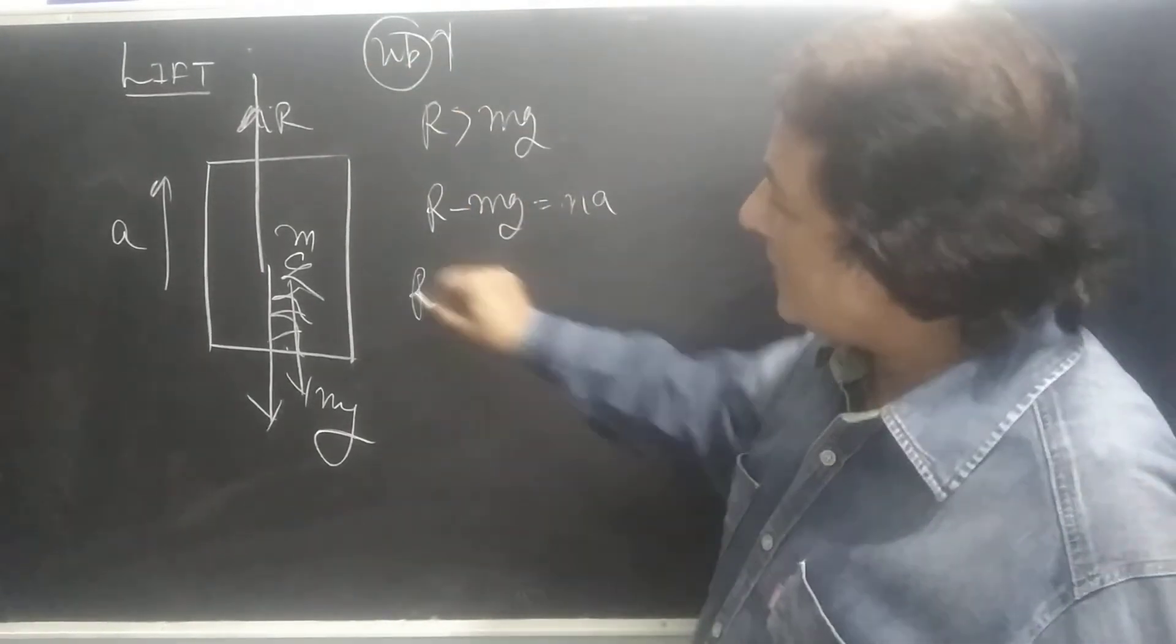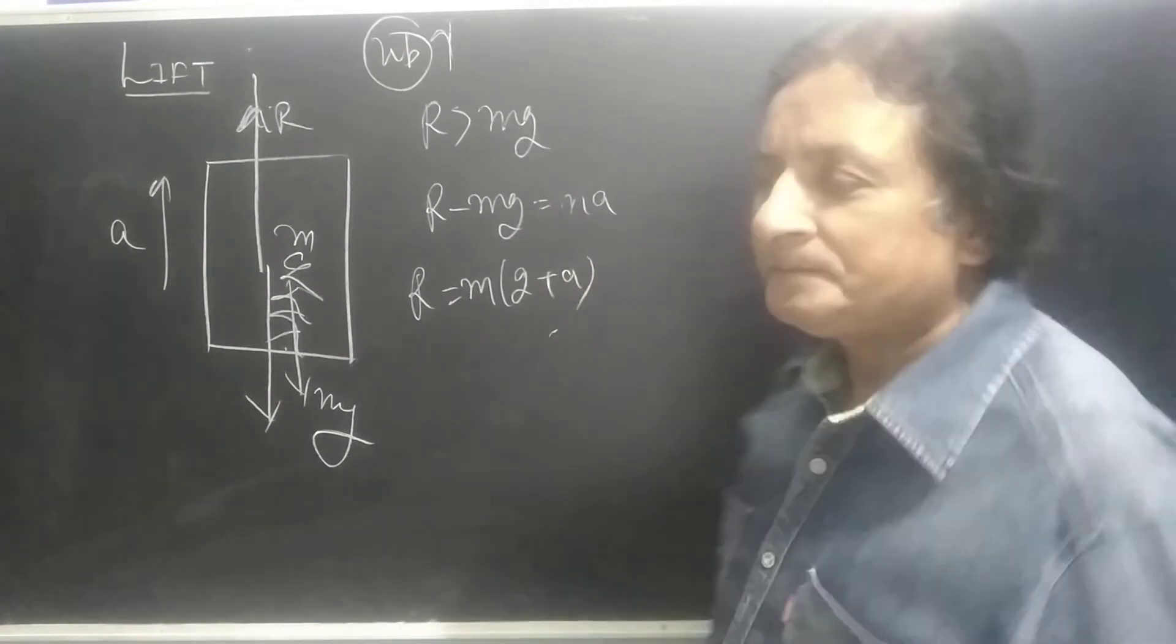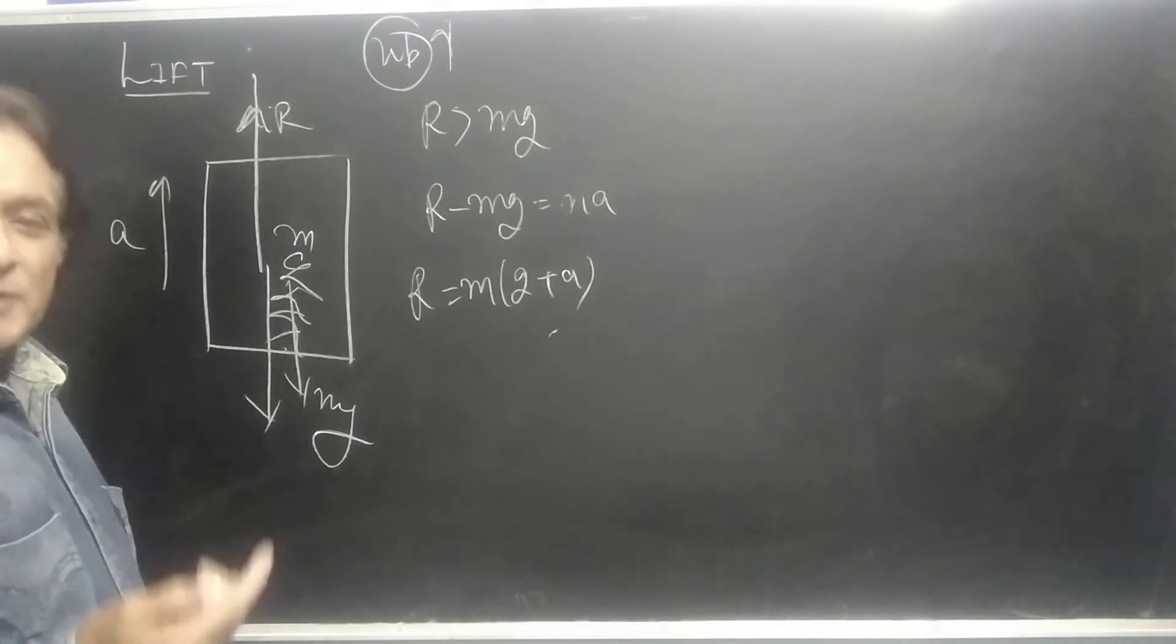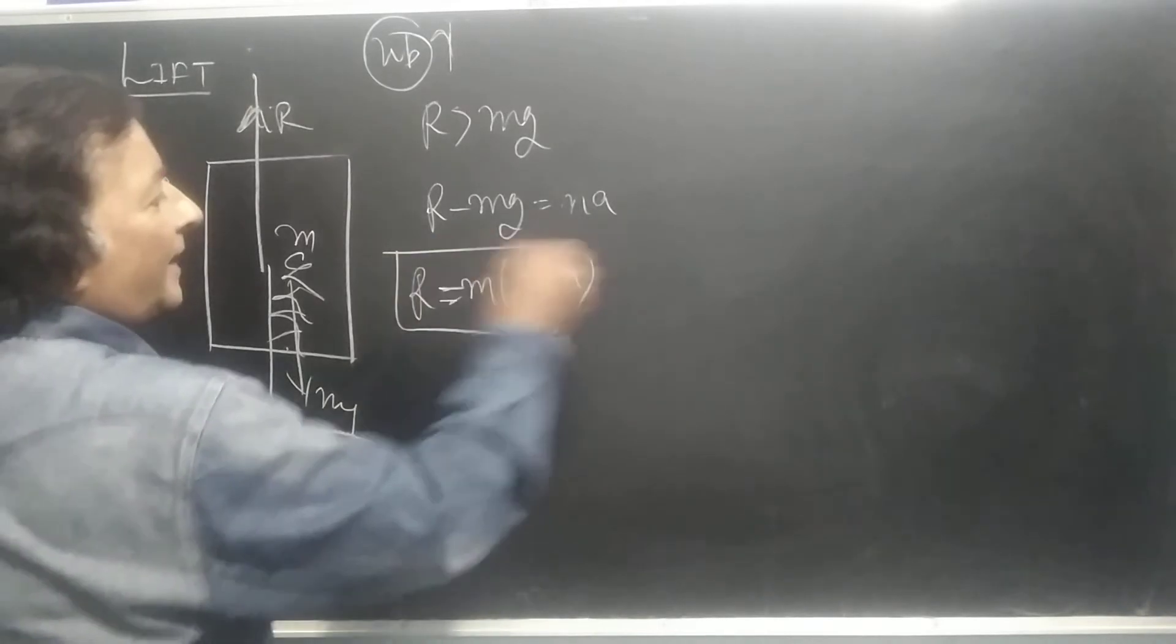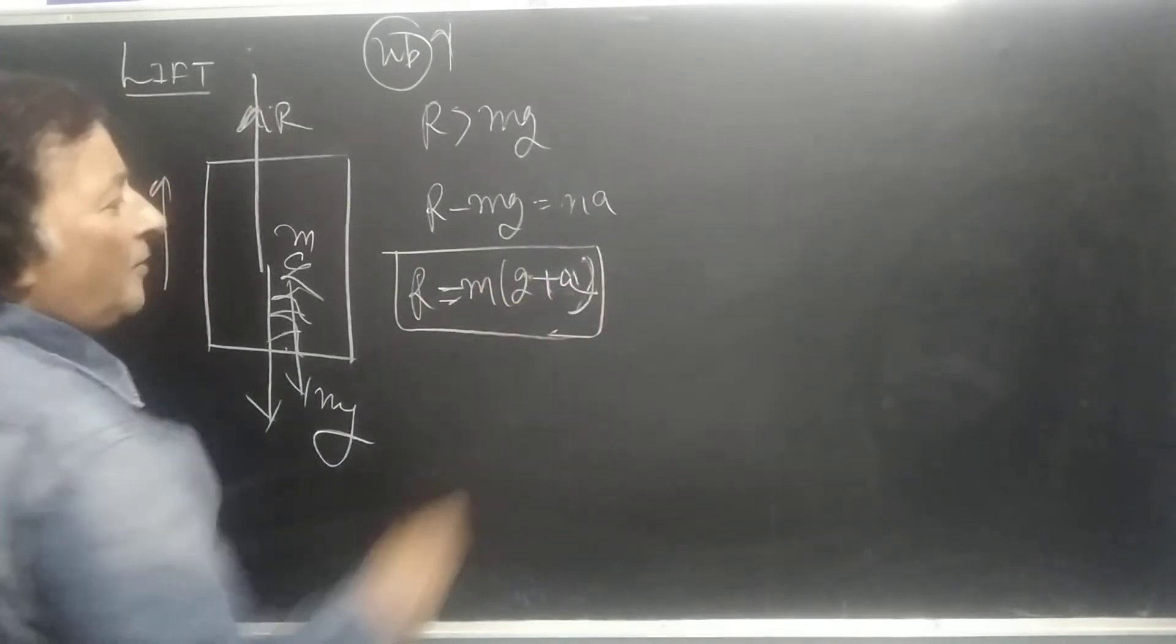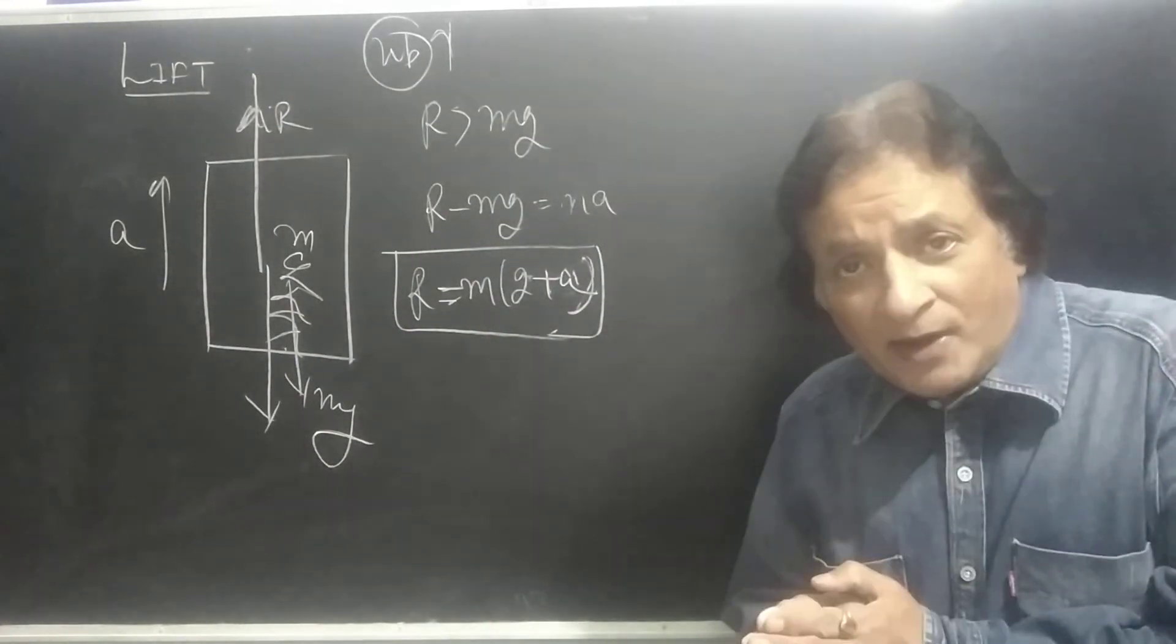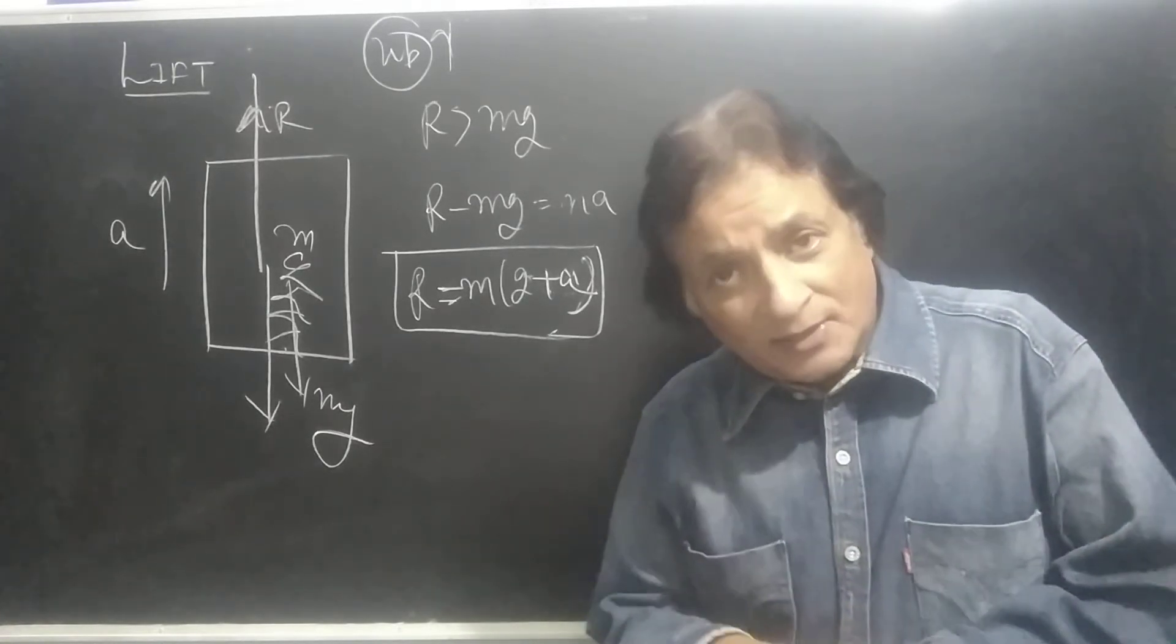So R is equal to M into G plus A. So students, when the lift is going vertically up, then the weight will increase by the value of acceleration. If you are going in the lift when it accelerates, then the weight will increase by the value of acceleration.